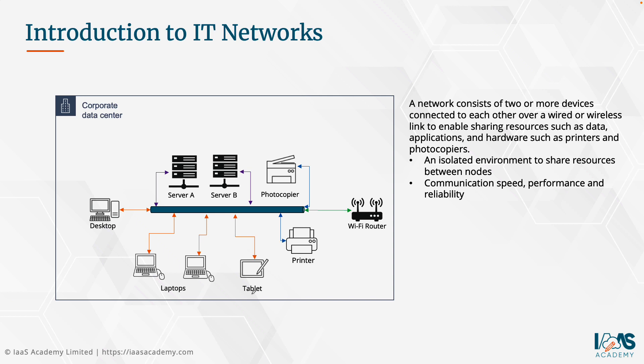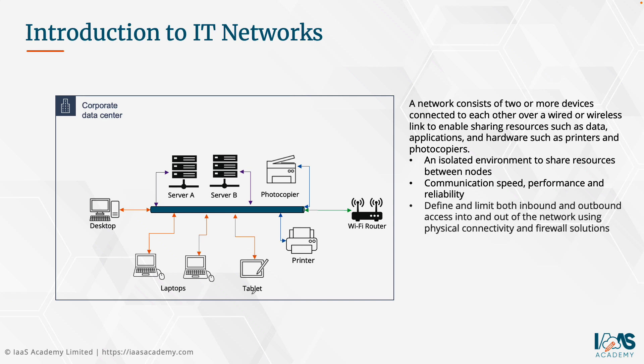Depending on how you build your IT network, you can define communication speed, performance and reliability. When it comes to communication speed, the type of Wi-Fi router you use or the versioning of the Ethernet services and cabling that you install is going to determine the communication speed in your network. In addition, you can define both inbound and outbound access into and out of the network using both physical connectivity and firewall solutions.